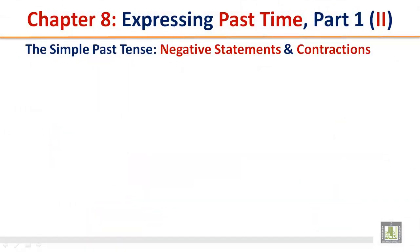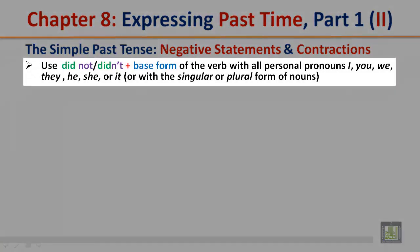The simple past tense — negative statements and contractions. Use 'did not' (contraction: didn't) plus the base form of the verb with all personal pronouns — I, you, we, they, he, she, or it — or with the singular or plural form of nouns.